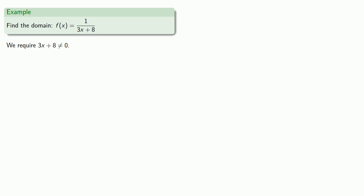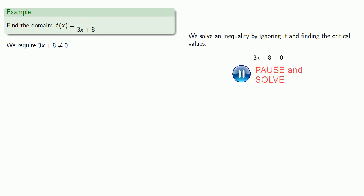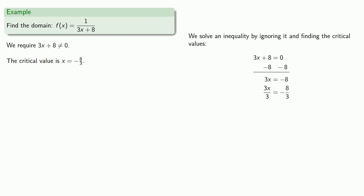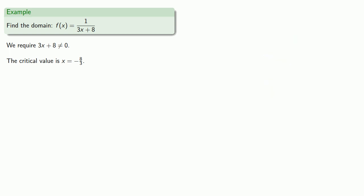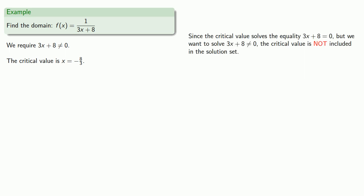This is an inequality, and we can solve it by first finding the critical values — ignoring the inequality sign. So let's solve the equation 3x + 8 = 0, which gives us our critical value. But like a good mathematician, or a good human being, we don't ignore the inequality forever — we do have to address it.